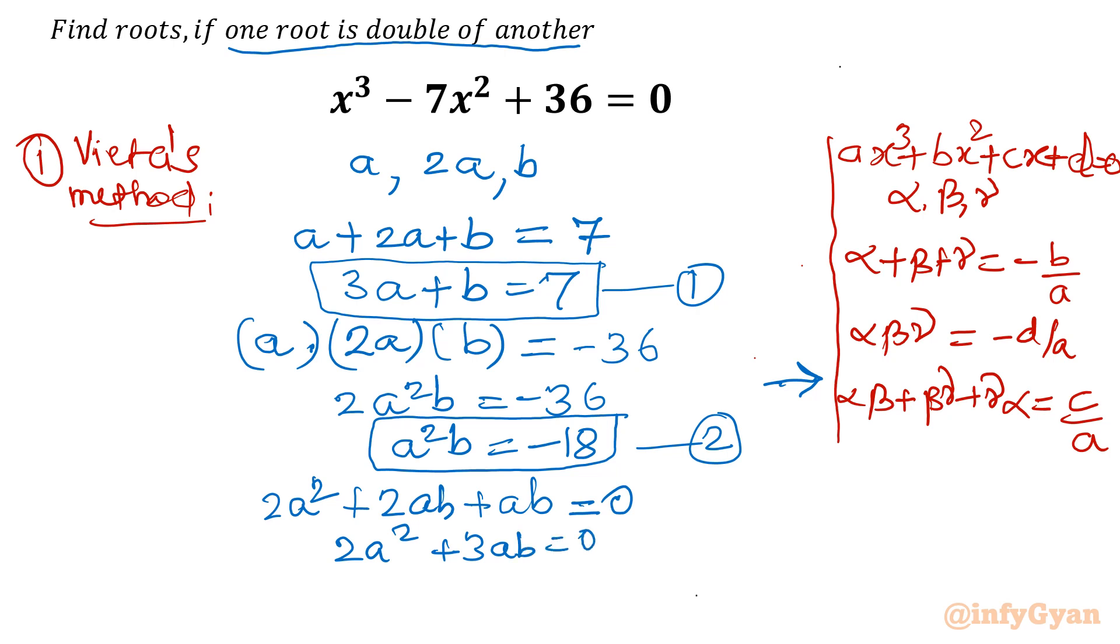I will take a common out: a(2a + 3b) = 0. Since a is one root, a cannot be 0. So which term will be 0? 2a + 3b = 0. This is equation number 1 and let's consider this equation number 3.